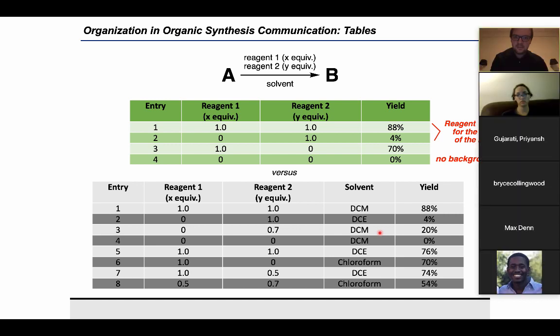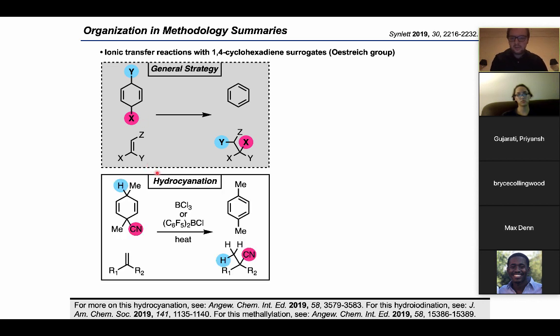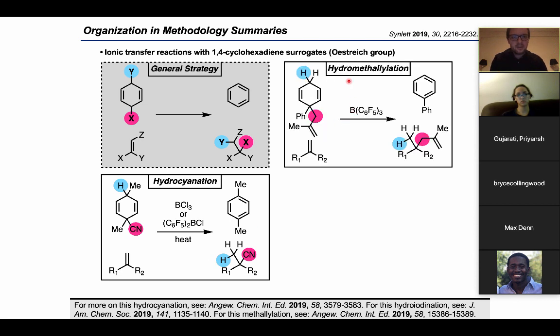So that's just a little bit about tables. And finally, the last thing I wanted to say about organization is in the area of summarizing methodologies, either your own methodologies or methodologies of someone else's work. So this is an example of a methodology summary I put together for one episode about the Birch reduction. And the idea of this methodology is to difunctionalize an alkyne using a 1,4-cyclohexadiene reagent. And this is the general strategy, but the way that this has been implemented, we'll give examples of as we go through. So in this first iteration, then this is a hydrocyanation where the authors are using a 1,4-cyclohexadiene bearing a hydrogen and a cyanide to do that transformation to difunctionalize the alkene.